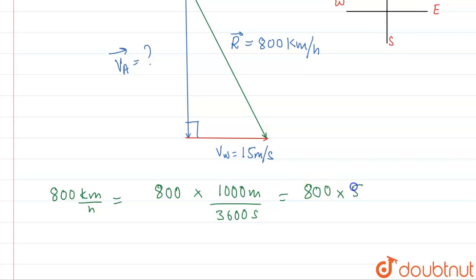This will come out to be what? 8 into 5 by 18. 8 in 800, basically 800 into 5 by 18. This will be equal to what?